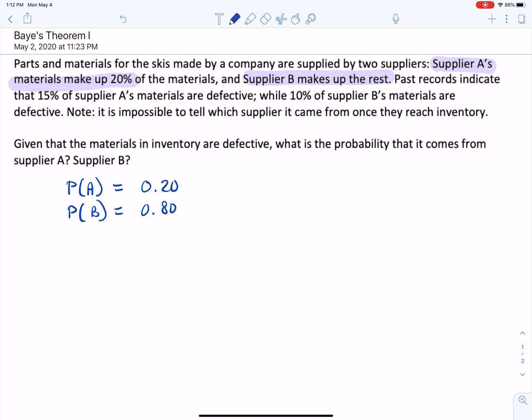So let's read further. Past records indicate that 15 percent of supplier A's materials are defective, while 10 percent of supplier B's are defective. So what that's telling me is the chance that I get a defective item, given that I already know it came from A. So of all the A's, the chance of getting a defective item is 15 percent. And out of all of the B's, given the B's, we know that we have a 10 percent chance of receiving a defective item.